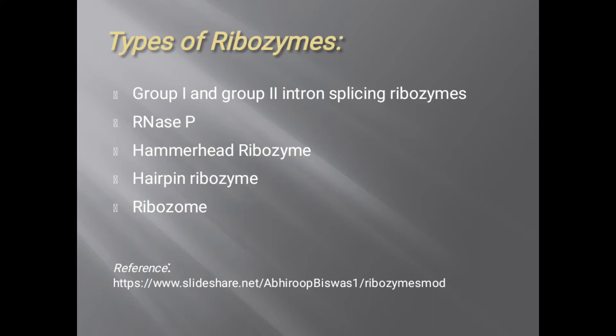Here are the types of ribozymes. Number 1: Group 1 and Group 2 intron splicing ribozymes. Then RNase P. Third one is the hammerhead ribozyme. Fourth one, hairpin ribozyme. And the last one is the ribosome.